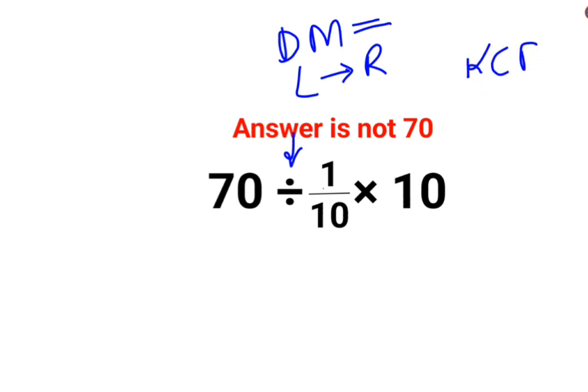Now in case of division you need to follow the rule of KCF where K stands for keeping the first number as it is, C stands for changing the division sign to multiplication and F stands for flipping or taking reciprocal of 1 upon 10 which is 10.